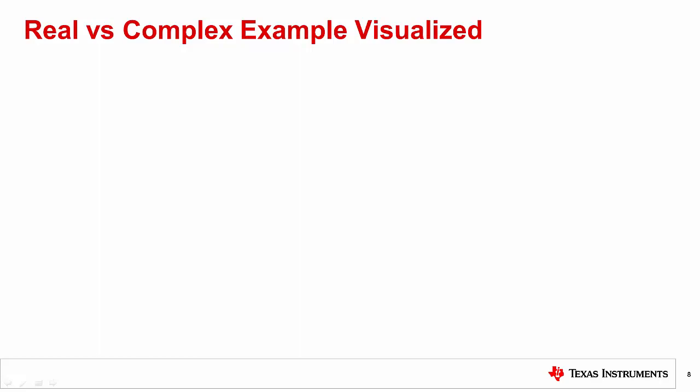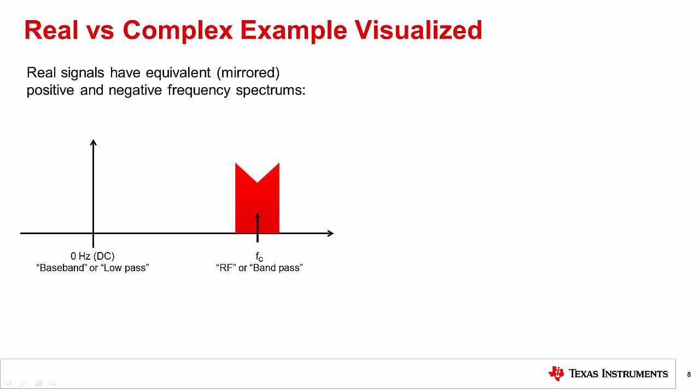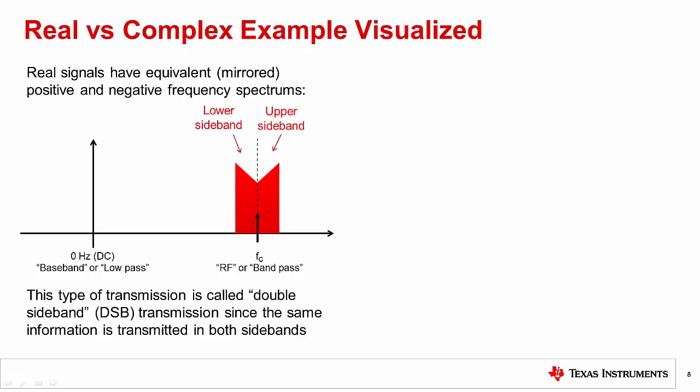Let's try to visualize this example in the frequency domain. In the real mixing case, a real signal such as a cosine wave has mirrored positive and negative frequency spectrums. Negative frequencies do not exist in the real world, but do in the analytic world. When this signal is mixed to a higher frequency, both positive and negative frequency spectrums are mixed up to the carrier frequency. We refer to the two sides of the carrier frequency as the lower sideband and upper sideband. In this case, both lower and upper sidebands contain the same information, which is not very efficient. This scenario is referred to as double sideband, or DSB, transmission, which is the result of real modulation.